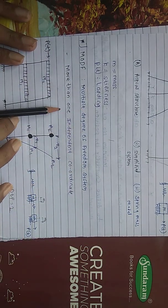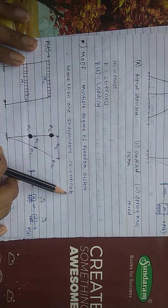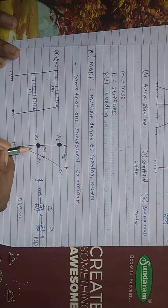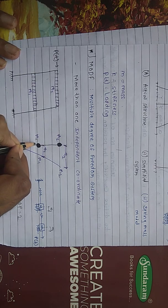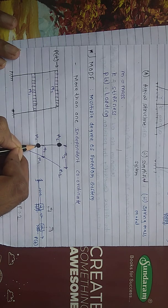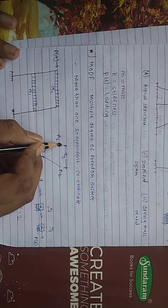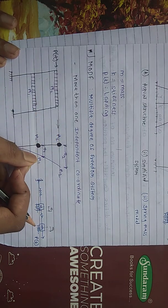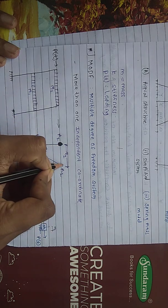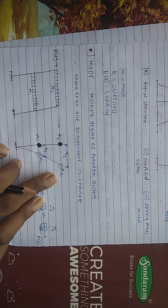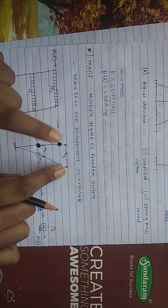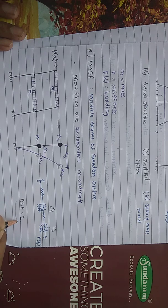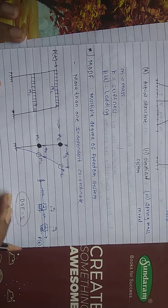Multiple degree of freedom system means more than one independent coordinate is required to define the location of the structure. For a two-story structure, the simplified spring-mass model has two masses and two stiffnesses. When the earthquake lateral load is applied, each mass moves, and we need coordinates X1 and X2 to fix the location at any instant. Hence this is called a two degree of freedom system.